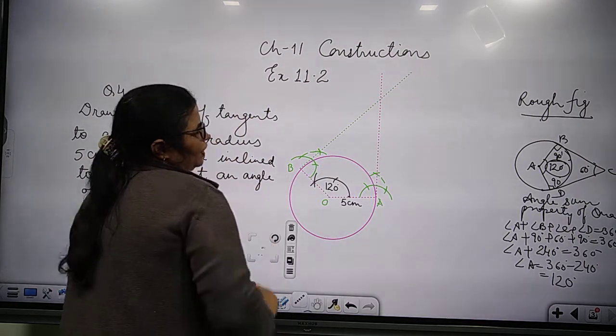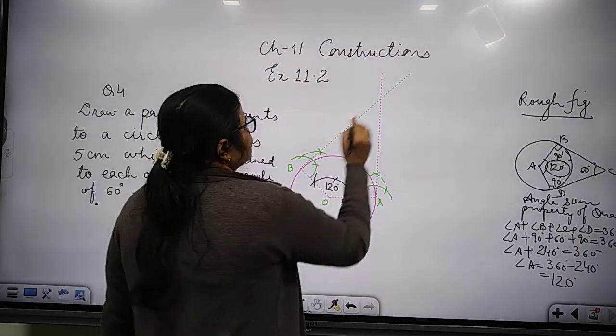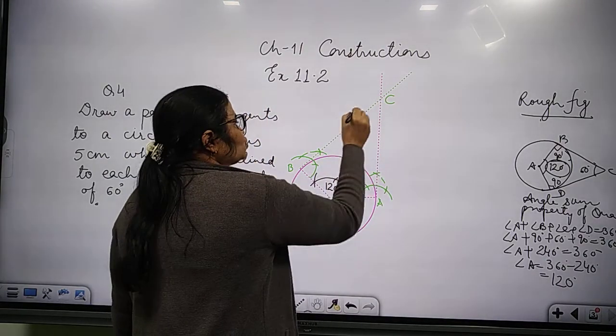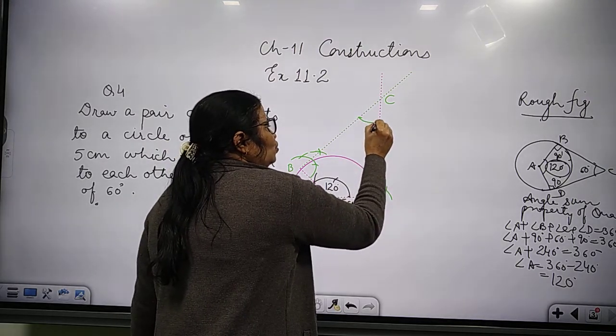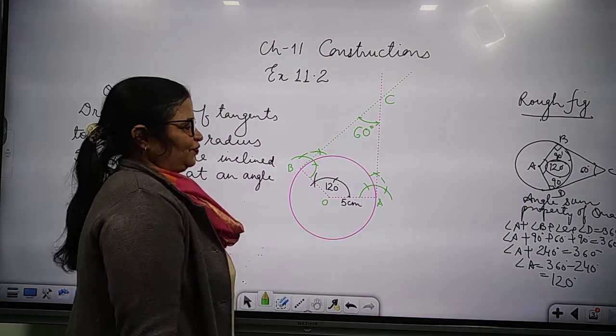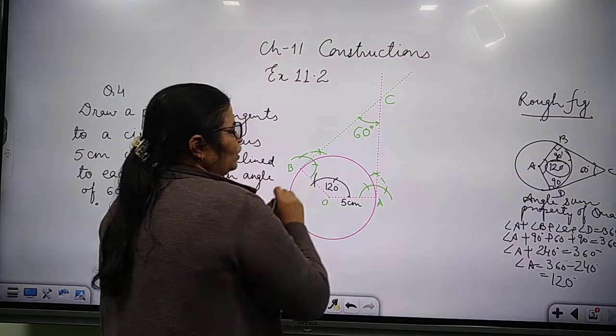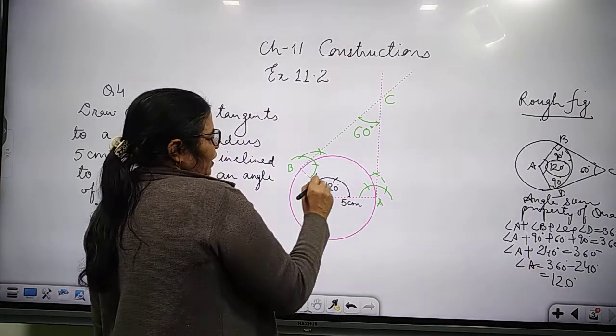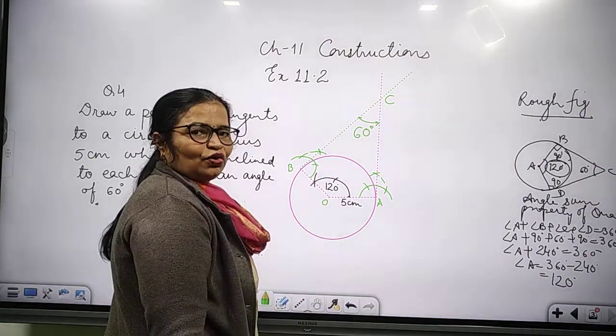Now, very nice. We have this point as C. And here these two tangents are inclined to each other at an angle of 60 degrees. Okay? Have you understood how they are beautifully inclined? And one more big fact: AC and BC are equal here.